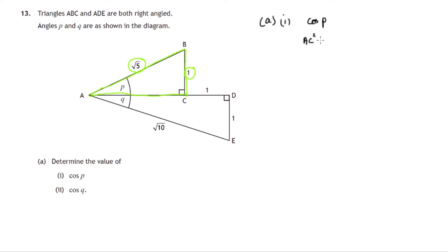AC squared would be AB squared minus BC squared. That's root 5 squared minus 1 squared.